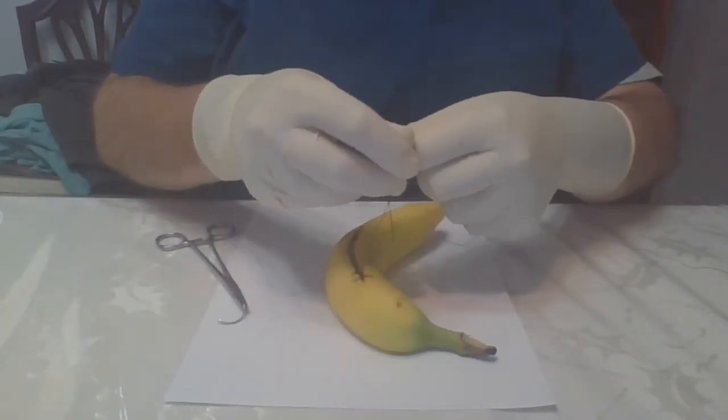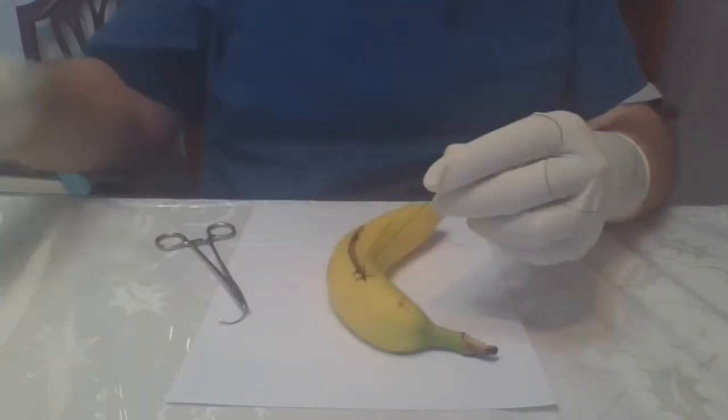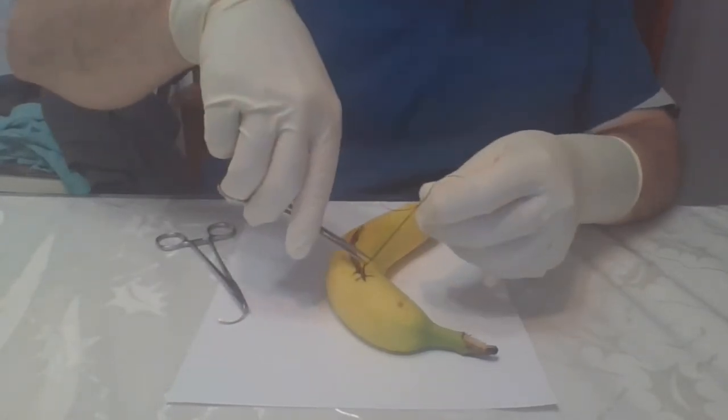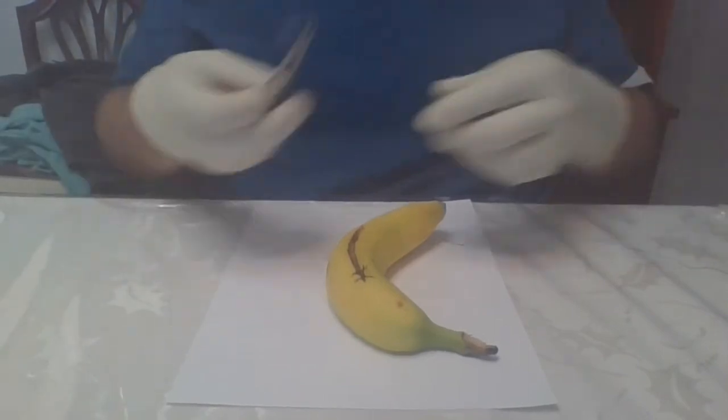Bananas are not the best for me to suture. I do better with pig's feet, as I tend to pull these through the skin of the banana. That one wasn't an air knot, but I did pull it through.